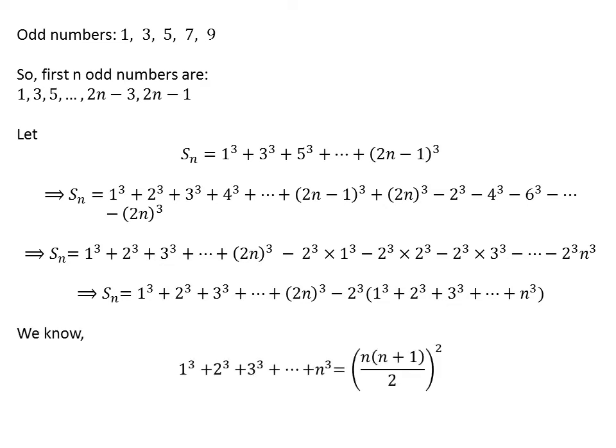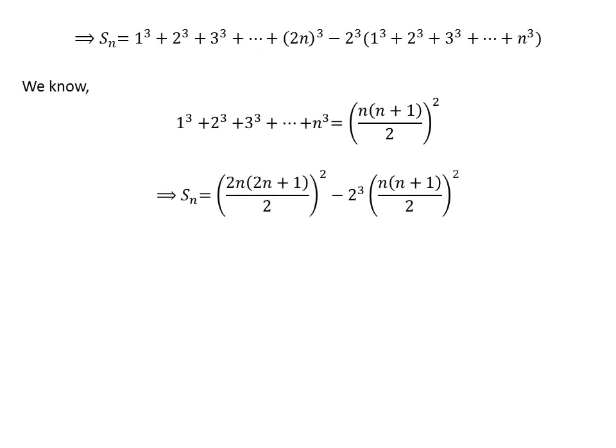We know the sum of cubes of the first n natural numbers is the square of n times (n plus 1) over 2. The video explaining the derivation is appearing in the upper right corner, and the link is also in the description. Plugging this into the expression for Sn, we get Sn equal to the square of (2n times (2n plus 1) over 2) minus cube of 2 times the square of (n times (n plus 1) over 2).